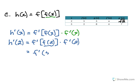So we have f prime of 5 times f prime of 2. From the table, f prime of 2 is e, and f prime of 5 is pi. So we have pi times e as our answer for this third problem.